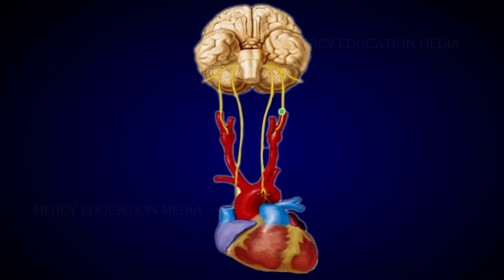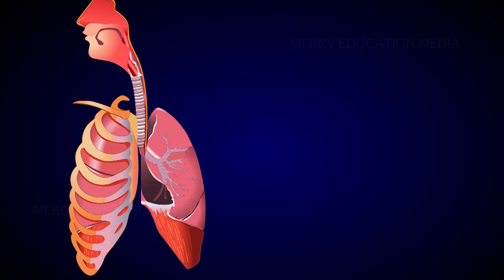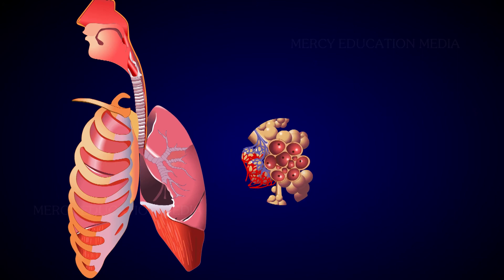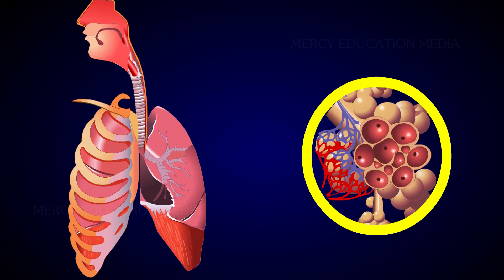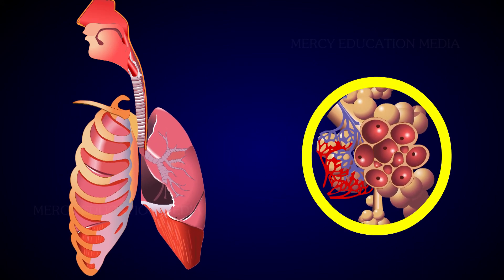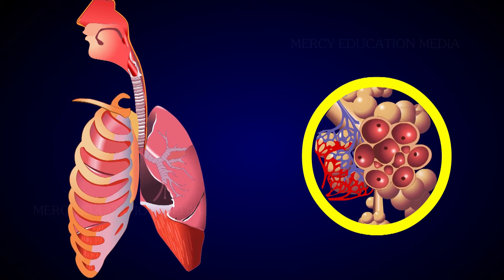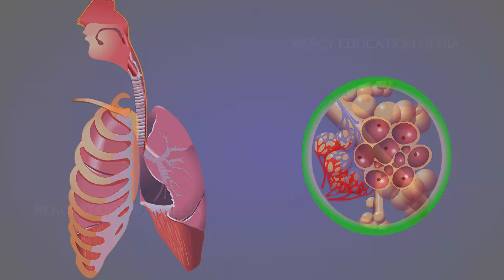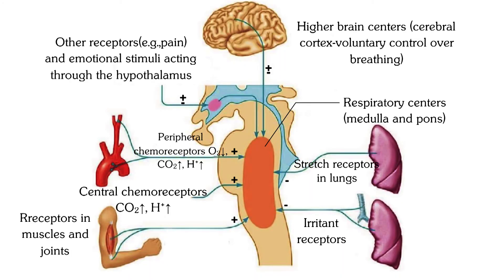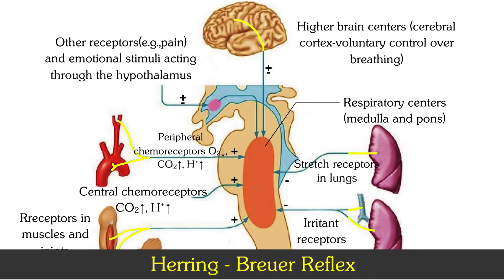These nerve fibres transmit impulses to the external intercostal muscles and internal intercostal muscles alternately. When the alveoli are stretched at the height of inspiration, the receptors send stimuli to the expiratory centre of the medulla through the vagus nerve, which inhibits further inspiration. This sequence of events is called the Hering-Breuer reflex.